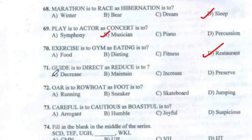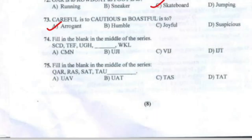Questions 71 through 75: Question 71 — Option A. Question 72 — Option C. Question 73 — Option A. Question 74 — Option C. Question 75 — Option A.